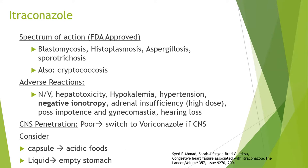Itraconazole is approved for blastomycosis, histoplasmosis, aspergillosis, and sporotrichosis, but can also be used for cryptococcosis. The important distinguishing effect is that it can have negative inotropy, so it is contraindicated in patients with systolic dysfunction. CNS penetration is poor; the primary antifungals for CNS are voriconazole and amphotericin. Important formulation considerations: the capsule must be consumed with acidic foods, whereas the liquid form must be consumed on an empty stomach.